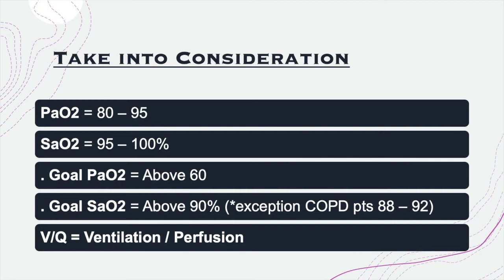The critical number to remember is 60 — we do not want the PaO2 dropping below 60. If the PaO2 drops below 60, we're going to place the patient on an oxygen source to help increase that value. The same applies to SaO2: we want a value between 95 and 100, but we must keep it above 90. If the SaO2 drops below 90, we apply an oxygen source.